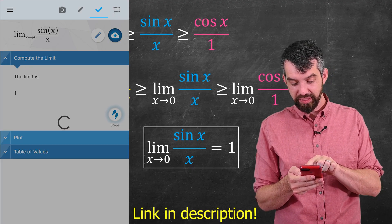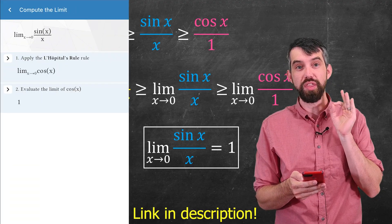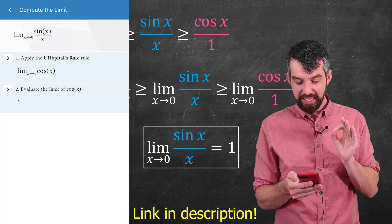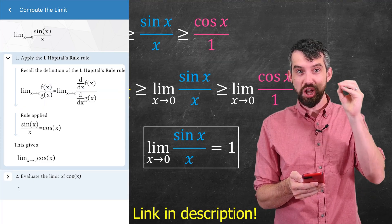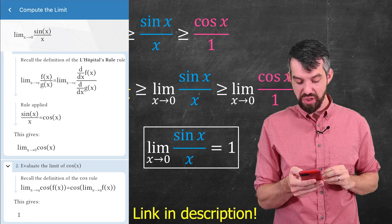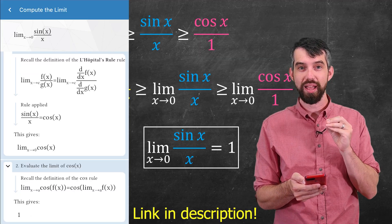Notice that Maple calculator tells us that the answer is indeed equal to 1, as we suspected. But more importantly, if I click the steps button, it's going to show me the argument for how this works. It says, use L'Hopital's Rule, take the derivative of the top, derivative of the bottom, plug it into the value of cosine, you get the value of 1.